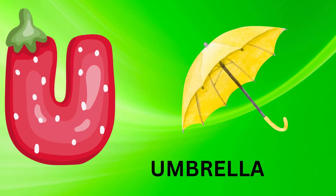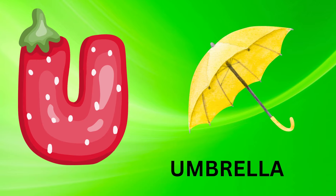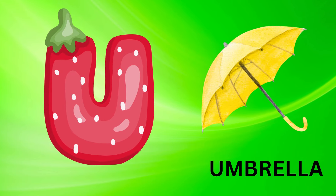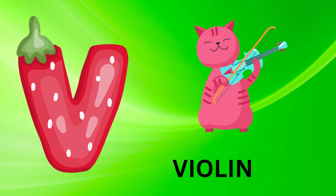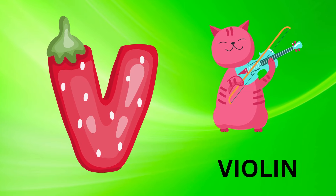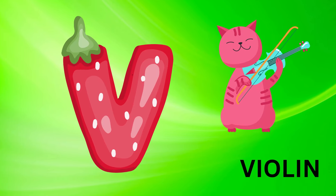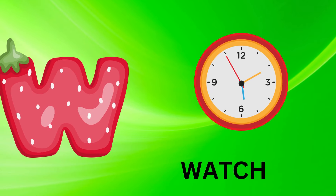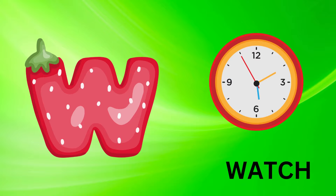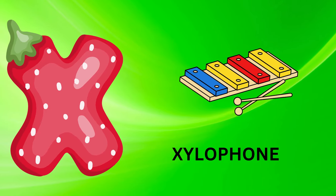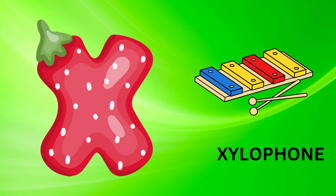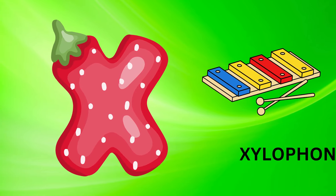U is for umbrella, u-u-umbrella. V is for violin, v-v-violin. W is for watch, w-w-watch. X is for xylophone, z-z-xylophone.